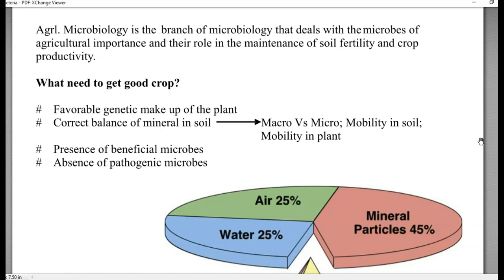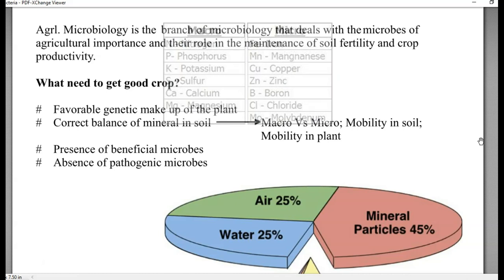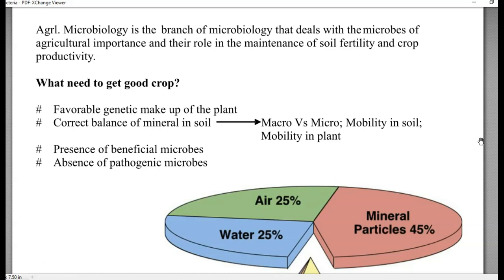Second, correct balance of minerals should be present in the soil. These minerals include both macro and micronutrients present in the soil. Macronutrients refer to carbon, hydrogen, oxygen, and phosphorus. Carbon can be taken up by the plant through carbon fixation since they are photosynthetic in nature.